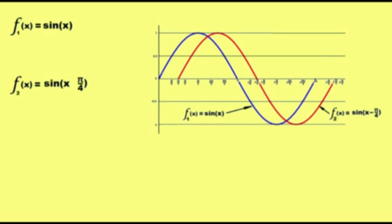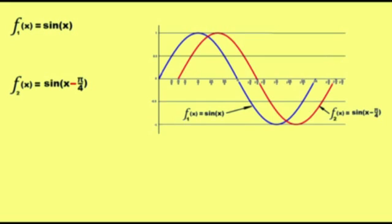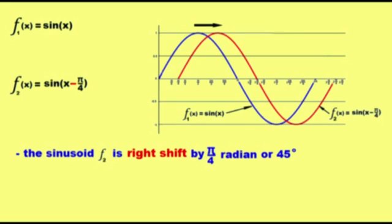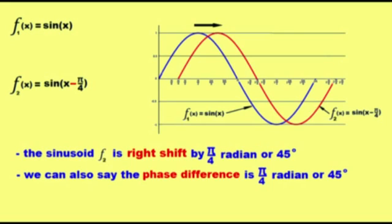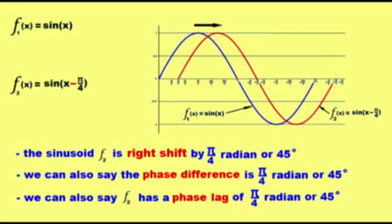Let's continue to negative phase shift. The sign in the shift factor should be negative. The negative phase shift sinusoidal waveform F2 is the red waveform here. You can see the waveform starts from pi over 4 radian of 45 degrees — it doesn't start from the origin. The sinusoidal waveform F2 is right-shifted by pi over 4 radian of 45 degrees. We can also say that F2 has a phase lag of pi over 4 radian of 45 degrees.